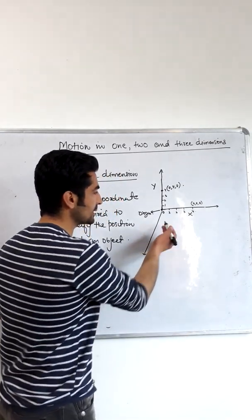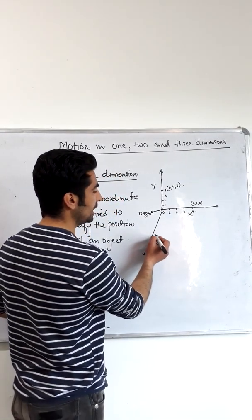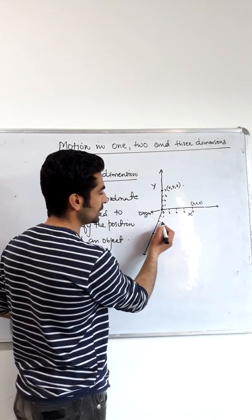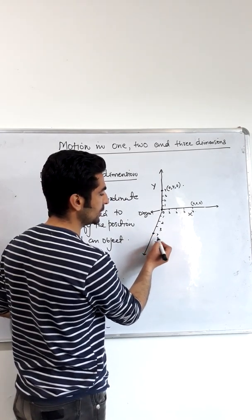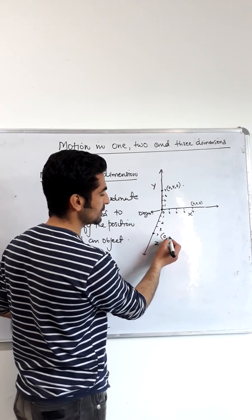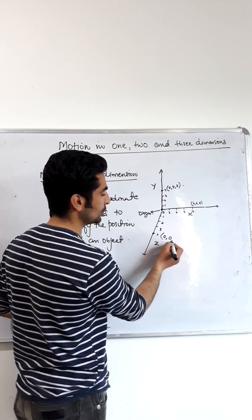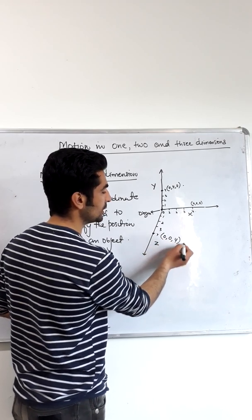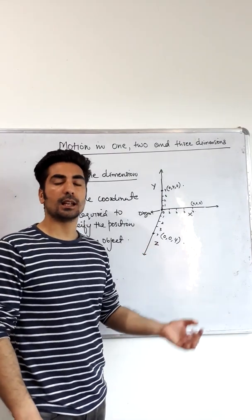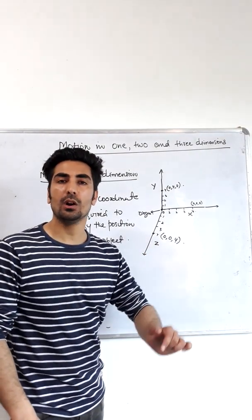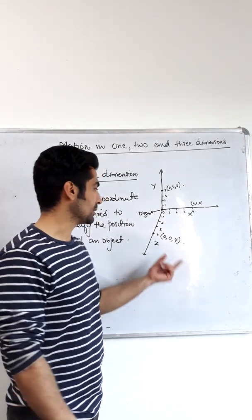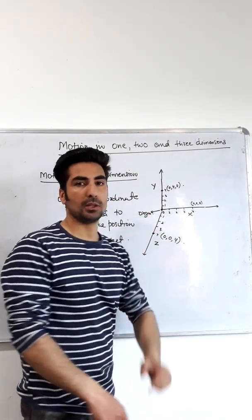If an object moves along the z-axis and reaches 4 units, the coordinates will be (0, 0, 4). This also means the object is moving along one dimension only — it is moving along one axis.